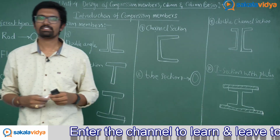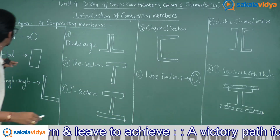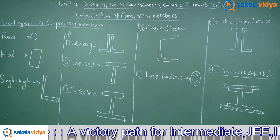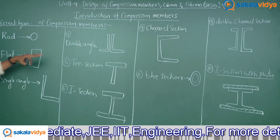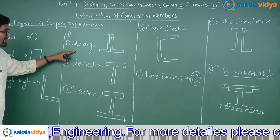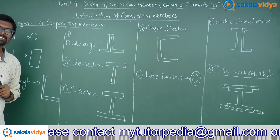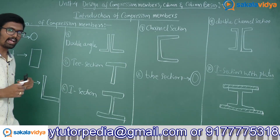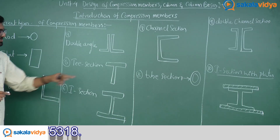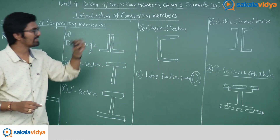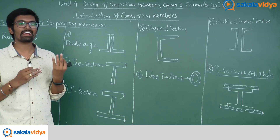Different types of compression members — this question is very important for your two marks. The first one is rod; second, flat; third, single angle section; fourth, double angle section — meaning two angles placed back to back; fifth, T section; sixth, I section; seventh, channel section; eighth, tube section; ninth, double channel section — meaning two channel sections placed back to back.